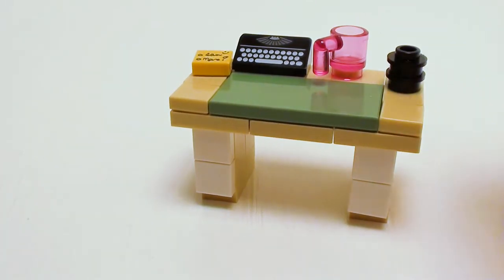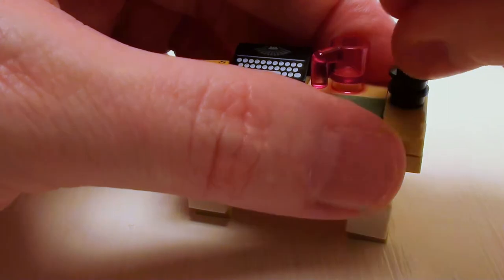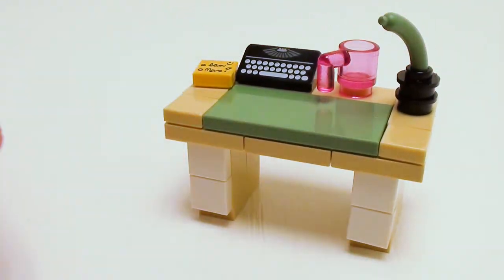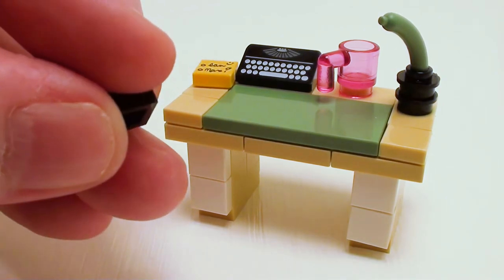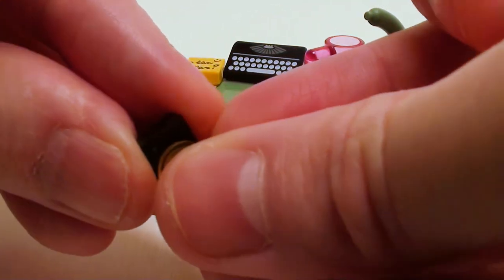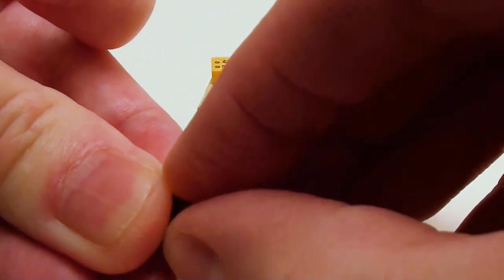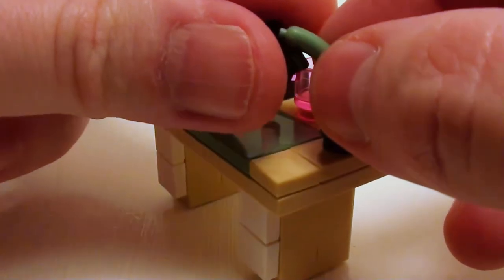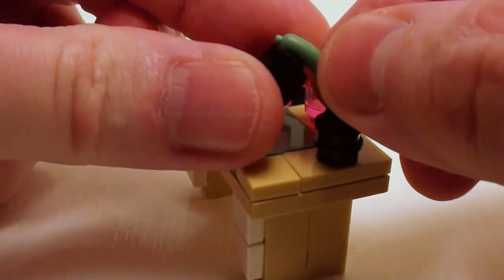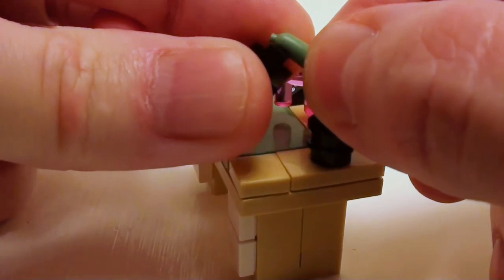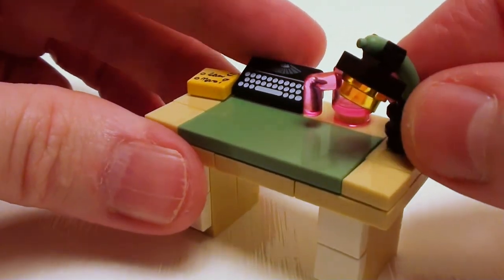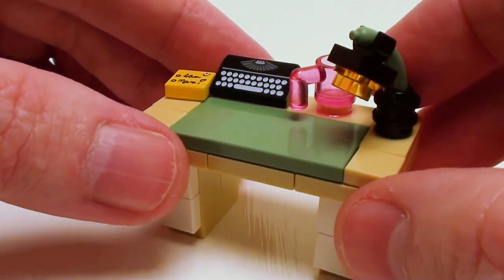Take one green hot dog. Set that right down in there. Take a 1 by 1 plate with top holder. We're going to place a yellow transparent stud on the bottom. And we're just going to snap this onto the hot dog. Trying to do this without laughing, but that's the beauty of unscripted videos. And there's our office desk.